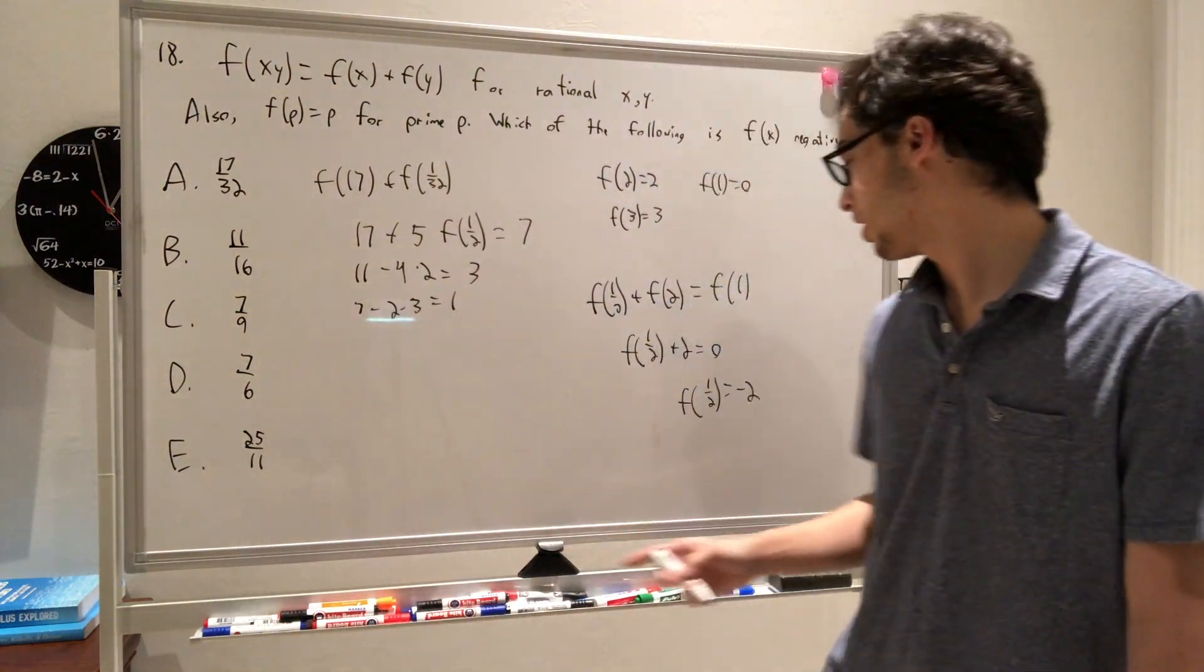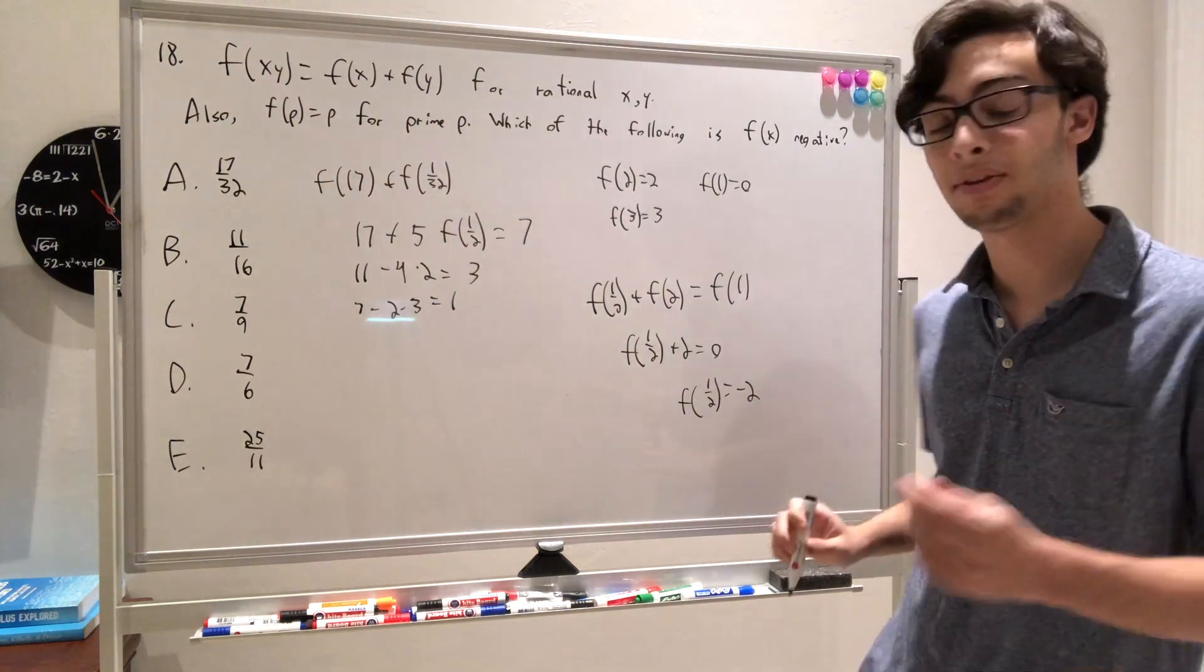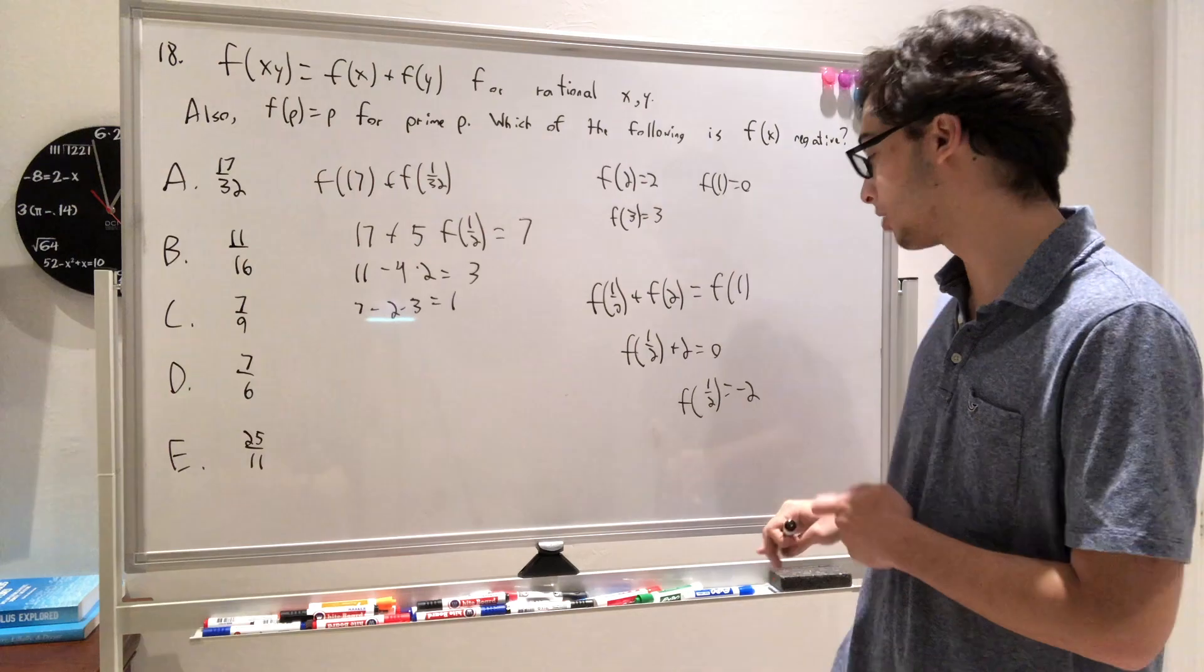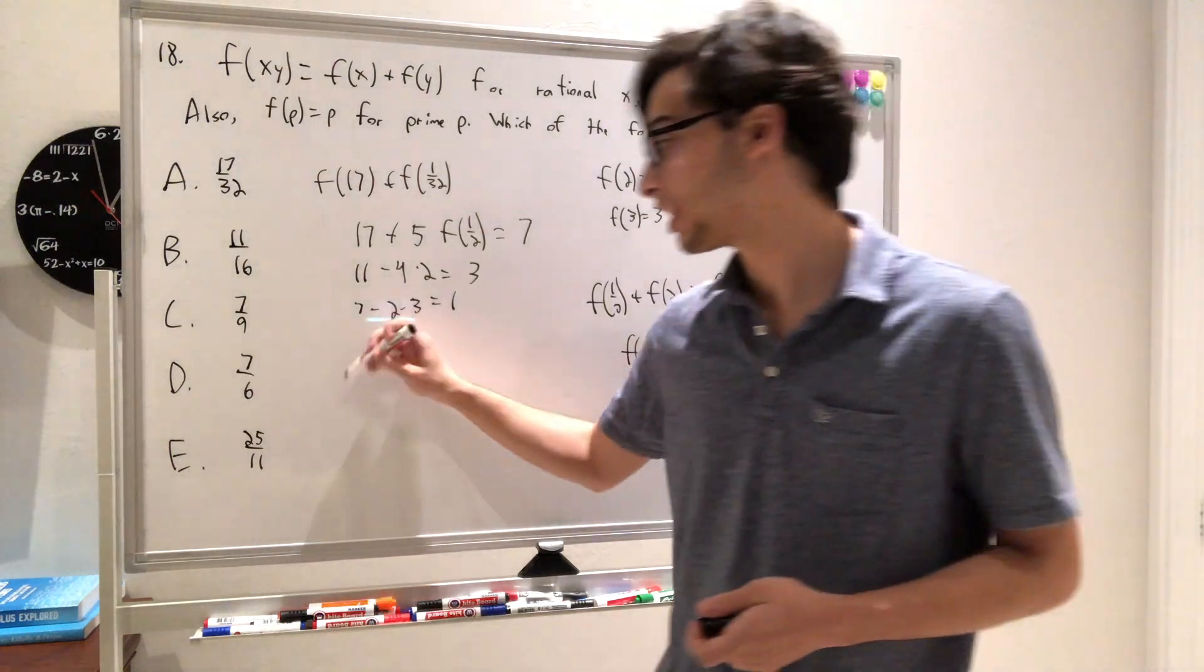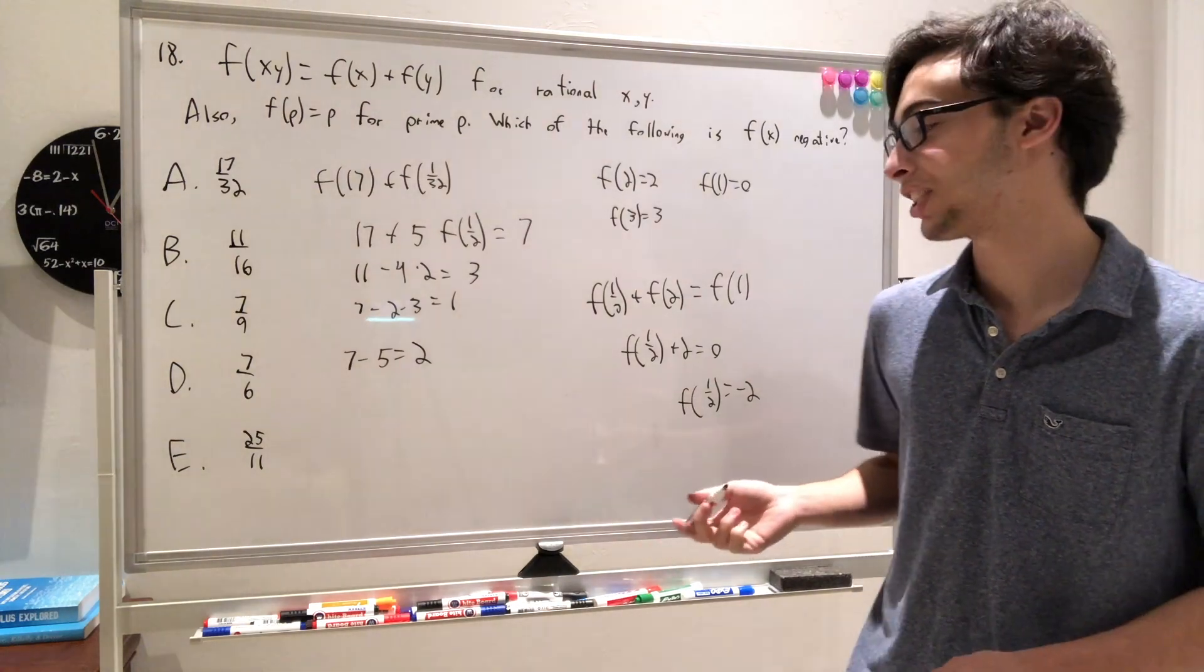Okay, here we know that f of 1 half is negative 2, and f of 1 third is negative 3, so f of 1 half plus f of 1 third is going to be negative 5. So that means we have 7 minus 5, which equals 2, still not negative, so probably going to be e, but let's check it just to be sure.